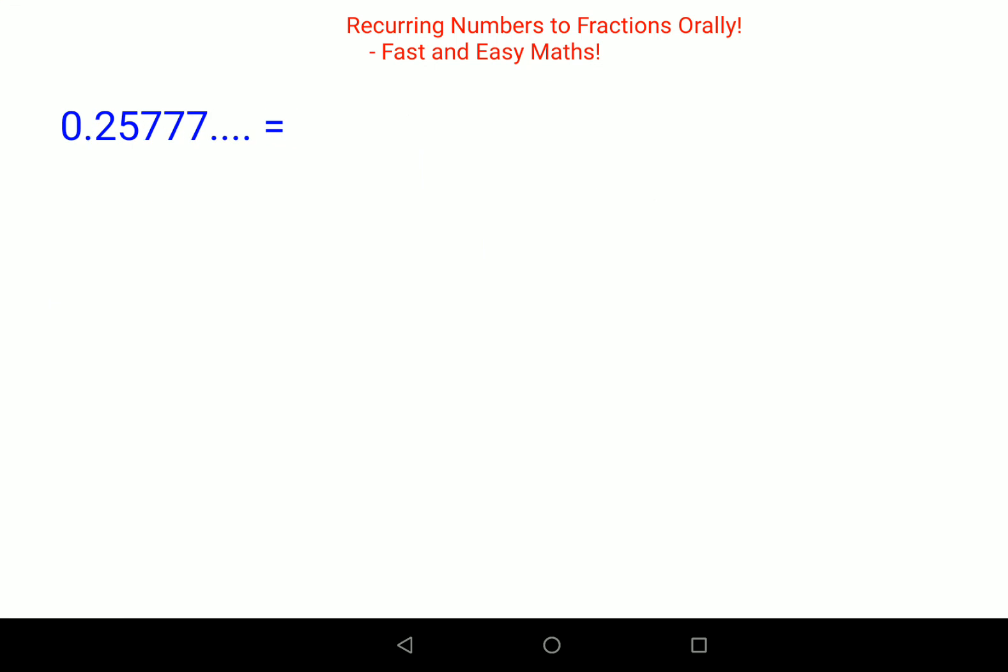Now in another case, let's see what happens. Here, if you see, there are two digits after which the recurring part starts. Again, we'll put this as x and we need to multiply this with 10,000, because we need the entire number once before the decimal point and just the recurring part after the decimal point.